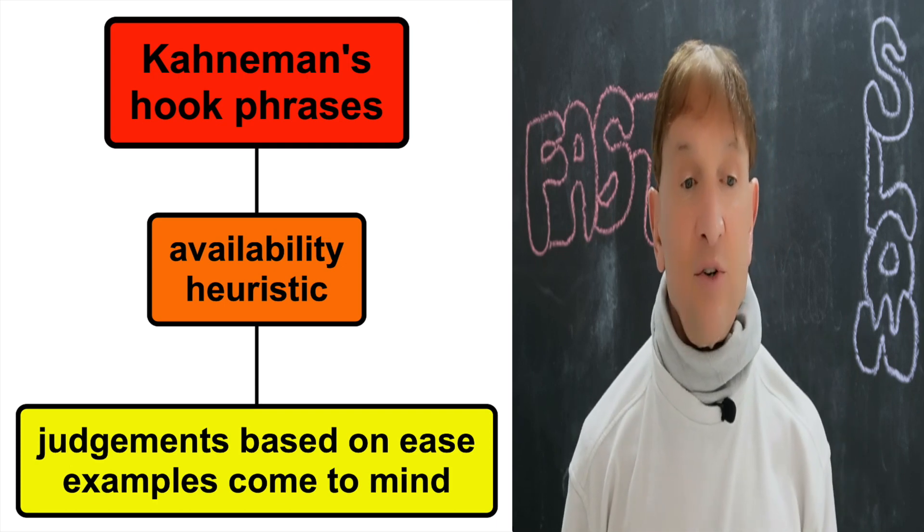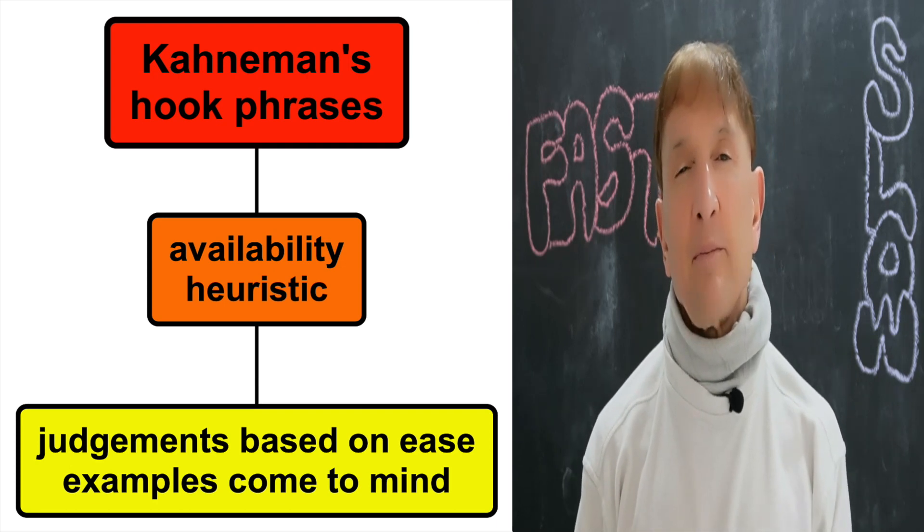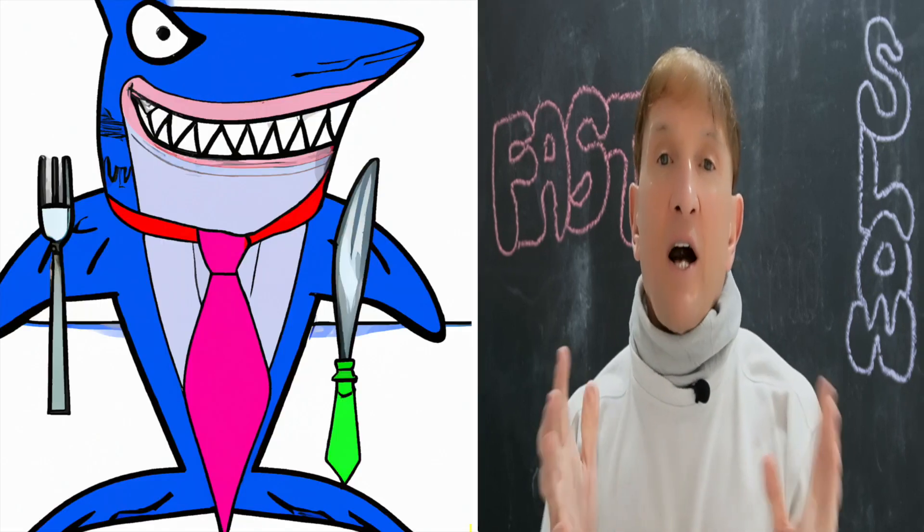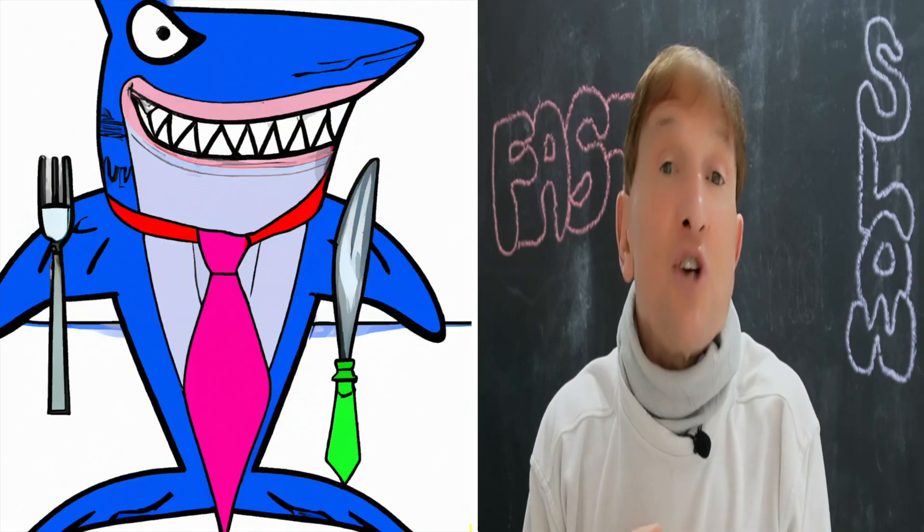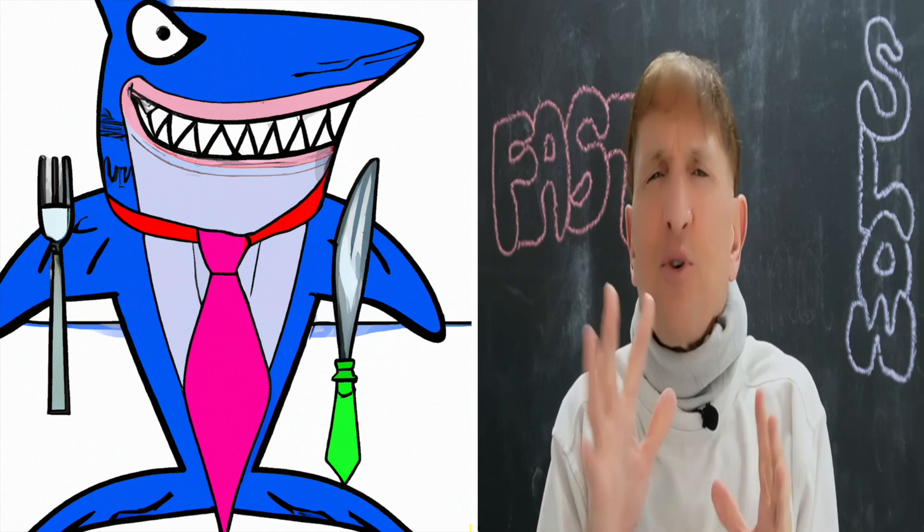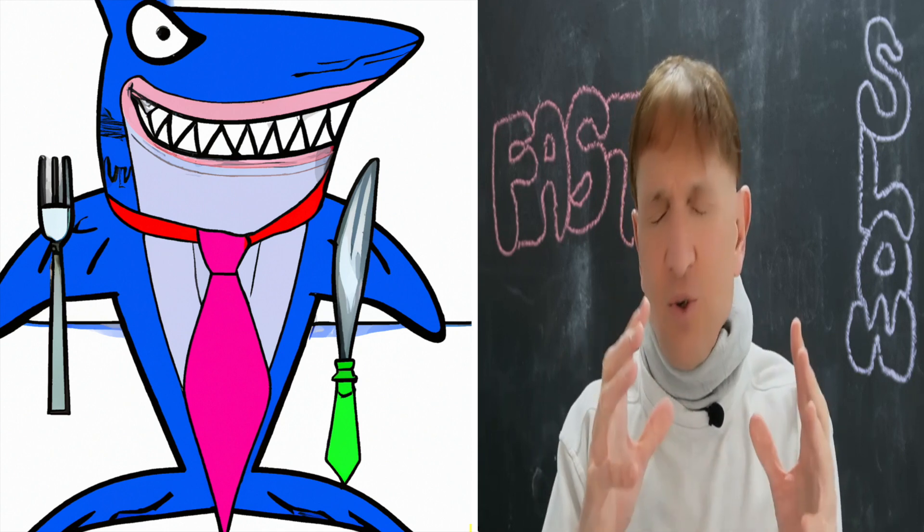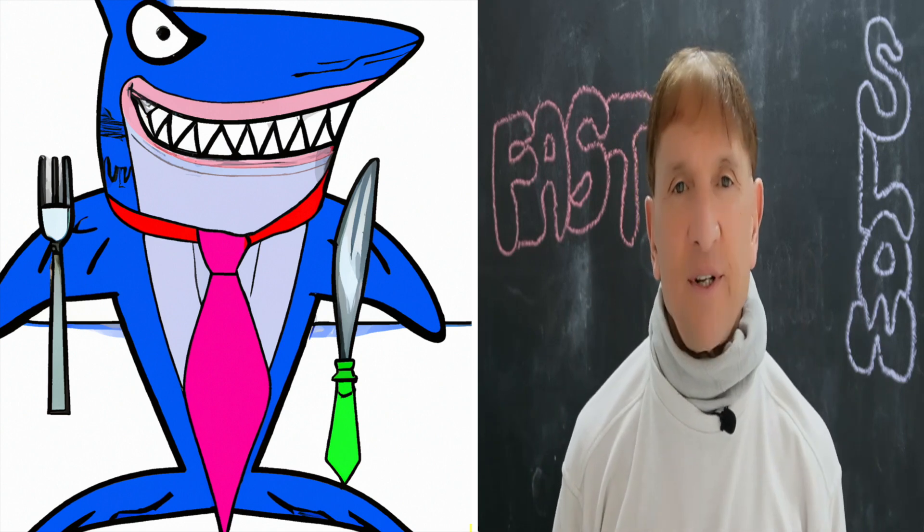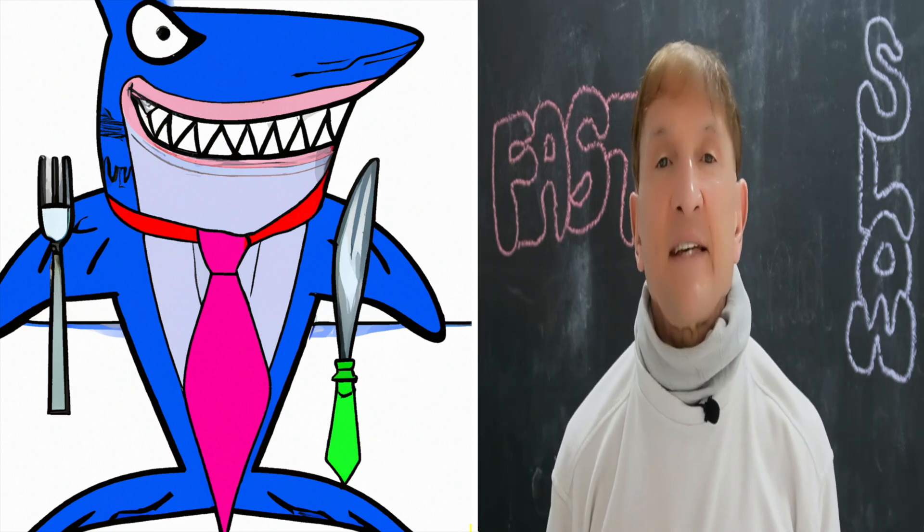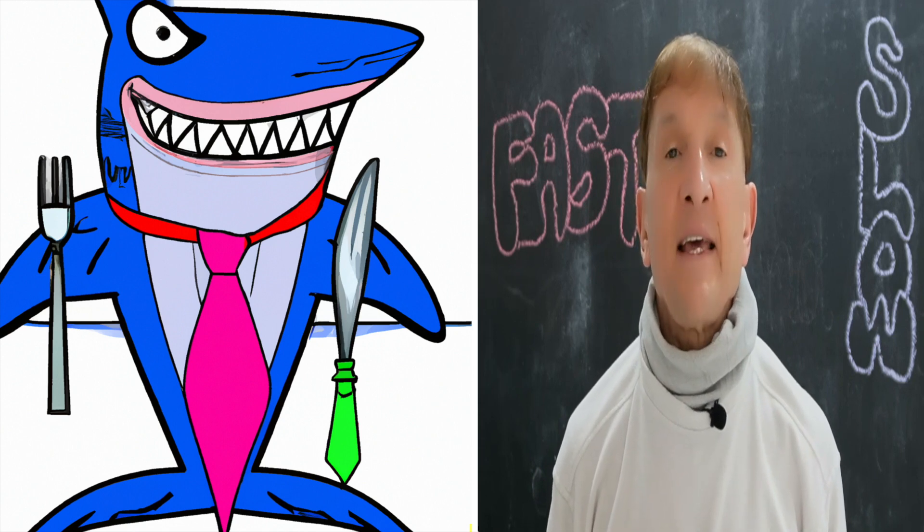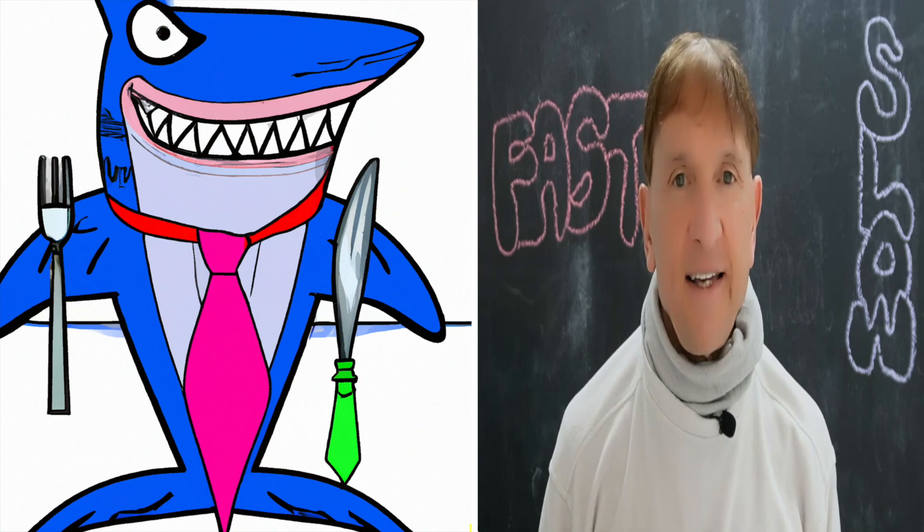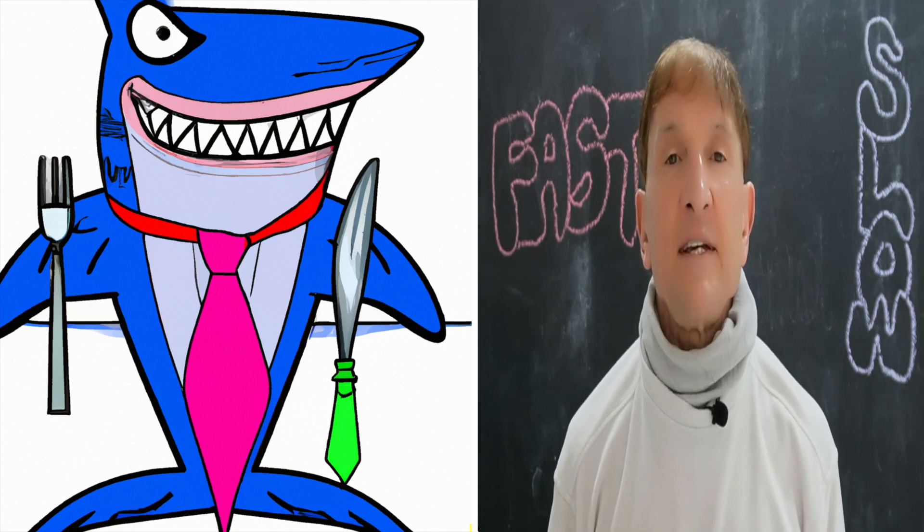An availability heuristic is a judgment based on examples. For instance, if you're asked to guess the frequency of shark attacks, and there's been two or three shark attacks recently in the news, have been all over it, highly publicized, you think they're really frequent. And you tend to guess high, because the availability of examples to you is high. That's an availability heuristic.